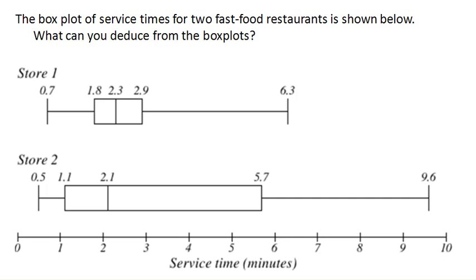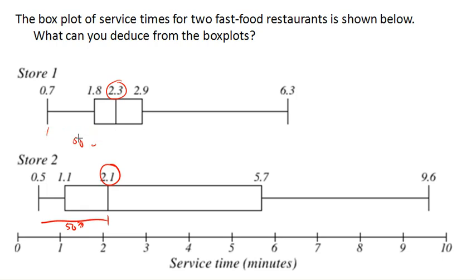Box plots can be particularly helpful when trying to compare two different data sets. In this case, we have two different fast food restaurants, two different stores. The first thing we might look at is the median — the middle bar represents the median. Store two has a smaller median, meaning 50% of the time you're served in under 2.3 minutes at store one, and under 2.1 minutes at store two. So by some measure of average, store two seems to serve a little bit faster.